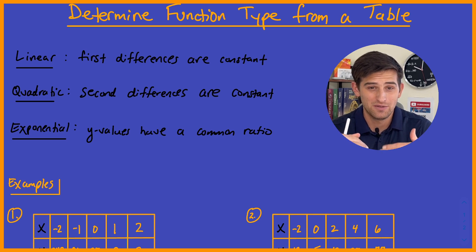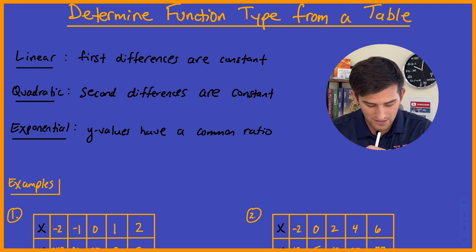So for a polynomial with a degree of three, the third difference is constant. Degree of four, the fourth differences would be constant, and so forth, as we increase that degree.